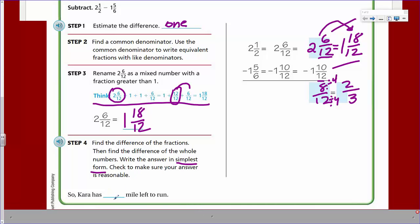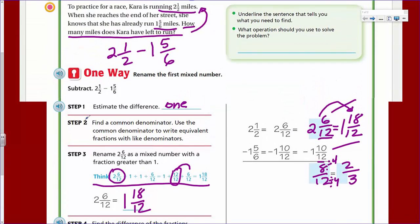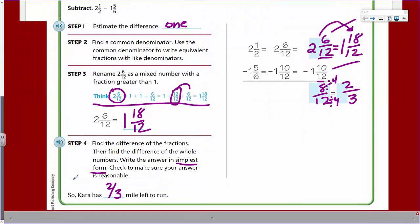And so here has, we decided 2/3 mile left to run. Is our answer reasonable? Well, I'd estimated one. 2/3 is pretty close to one. If we were to do a quick little area kind of model here, we could show that this here is 1/3, here's another. So there's 2/3 right here. That's pretty close to one.